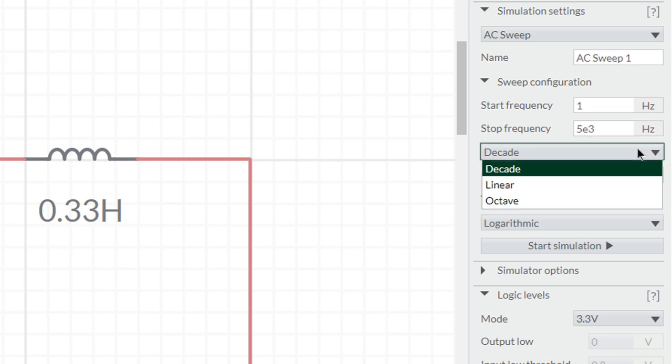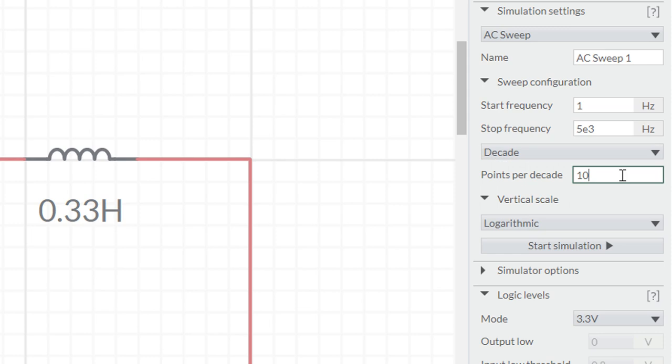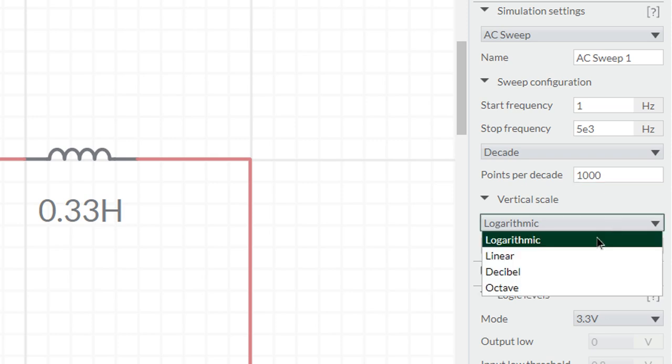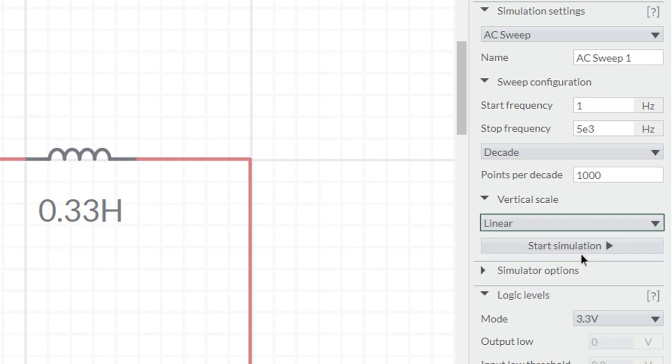I choose an x-axis scale decade, which is base 10 logarithmic, which shows a vast amount of change on the x-axis on a small graph. I put a thousand points per decade to get more granularity on the graph so it looks better. I choose a linear y-axis because that's my preference, but you can choose log or dB.